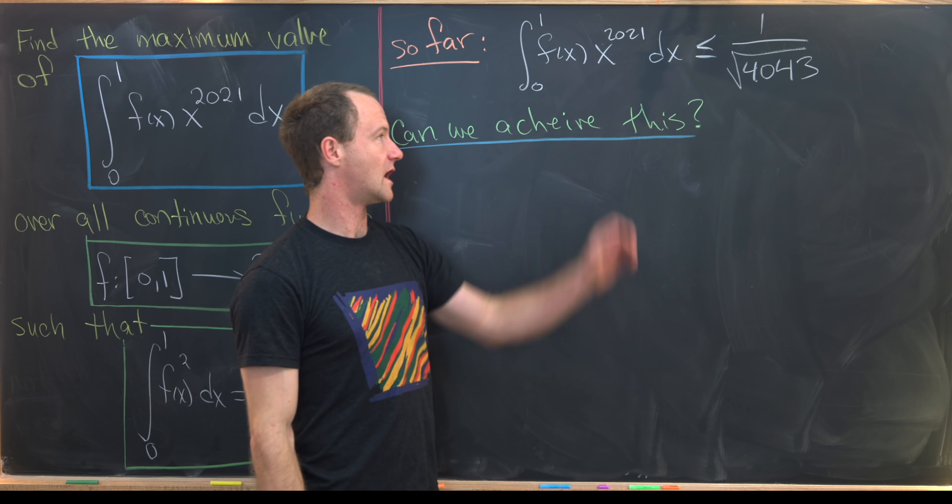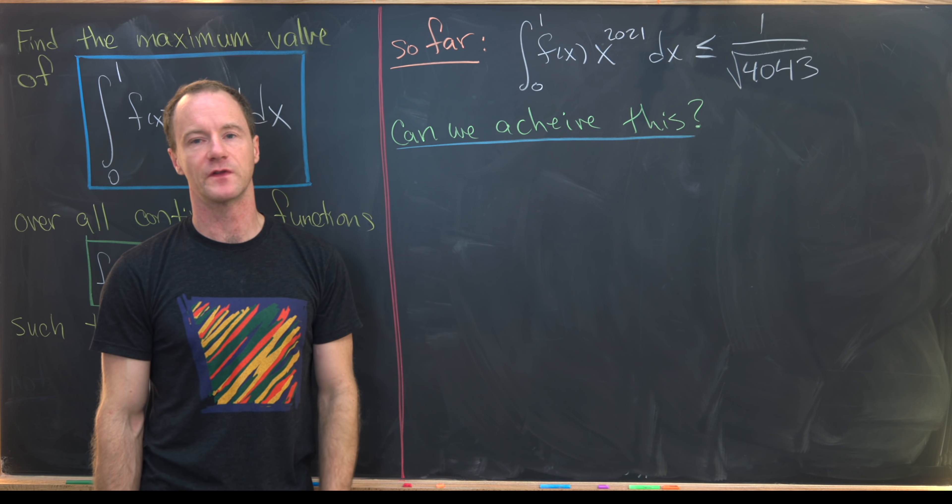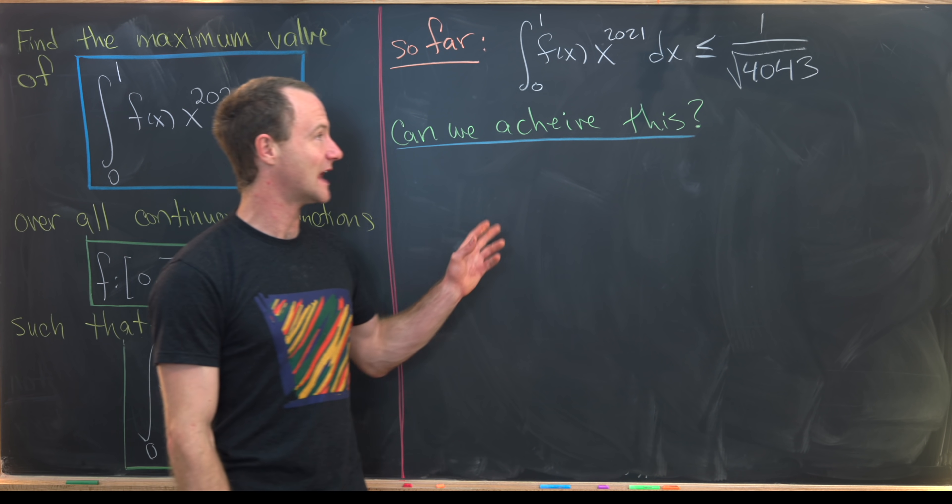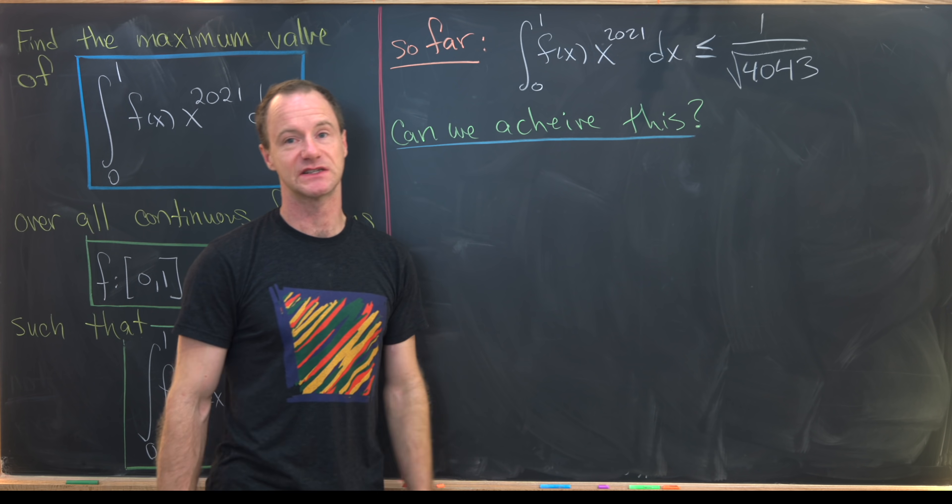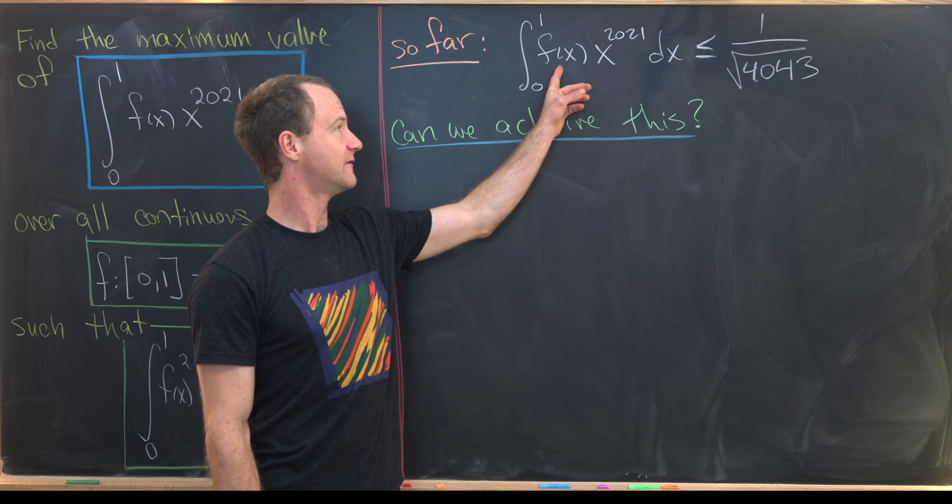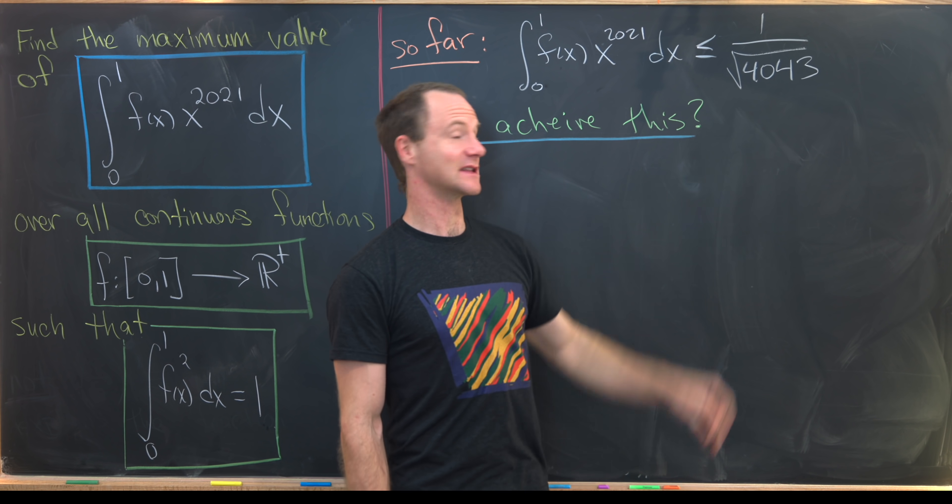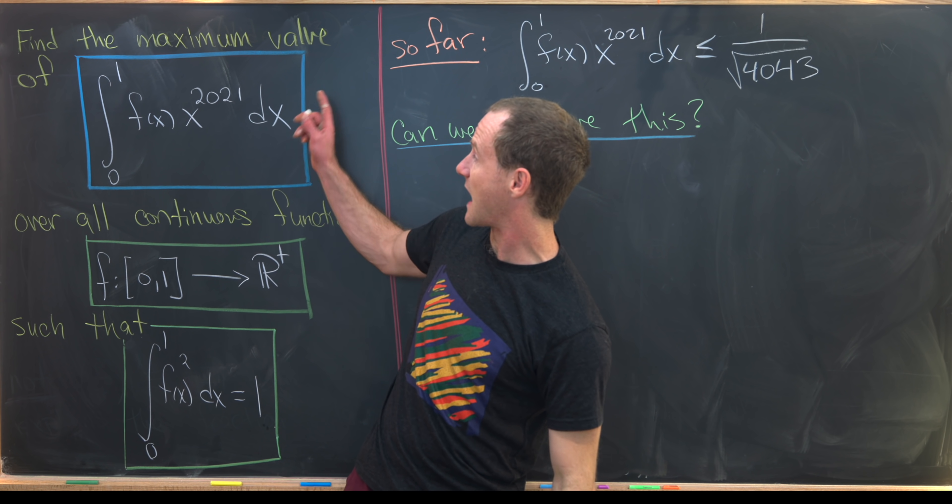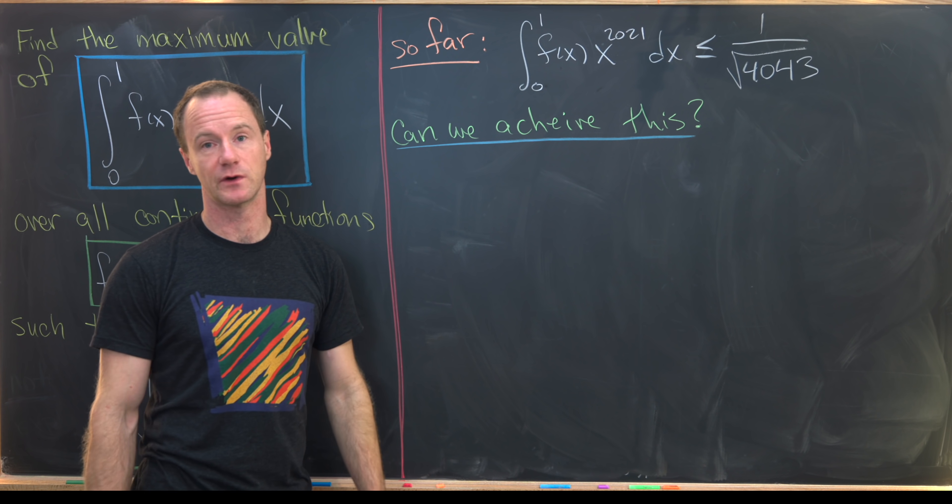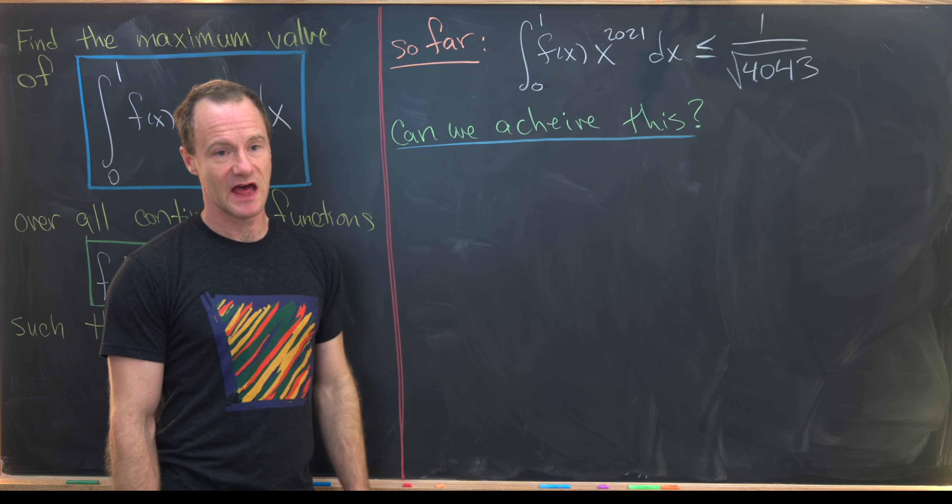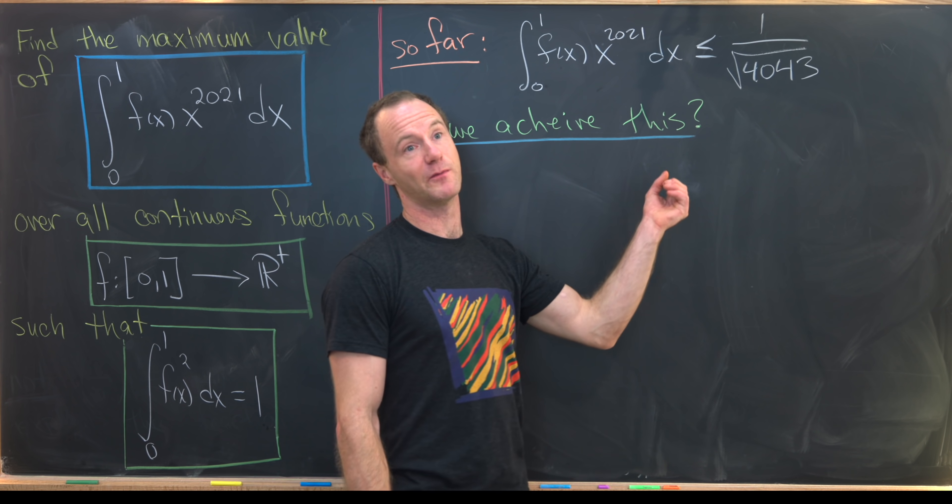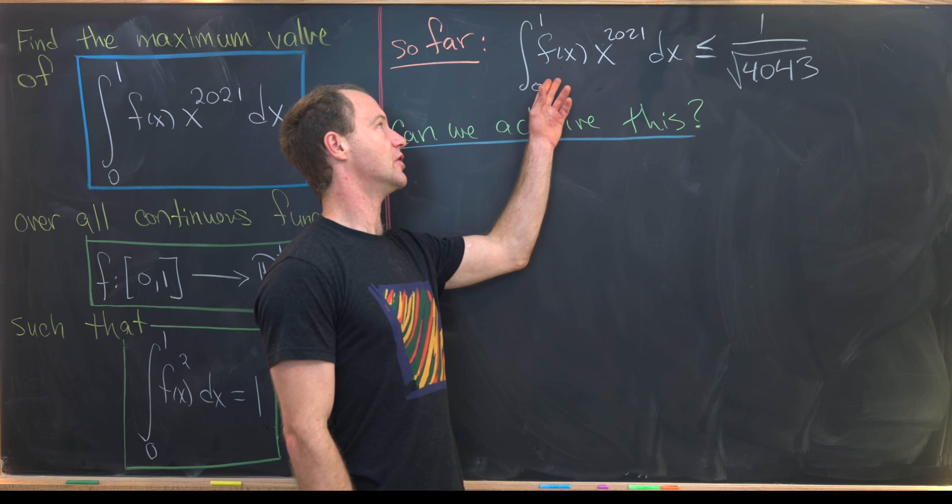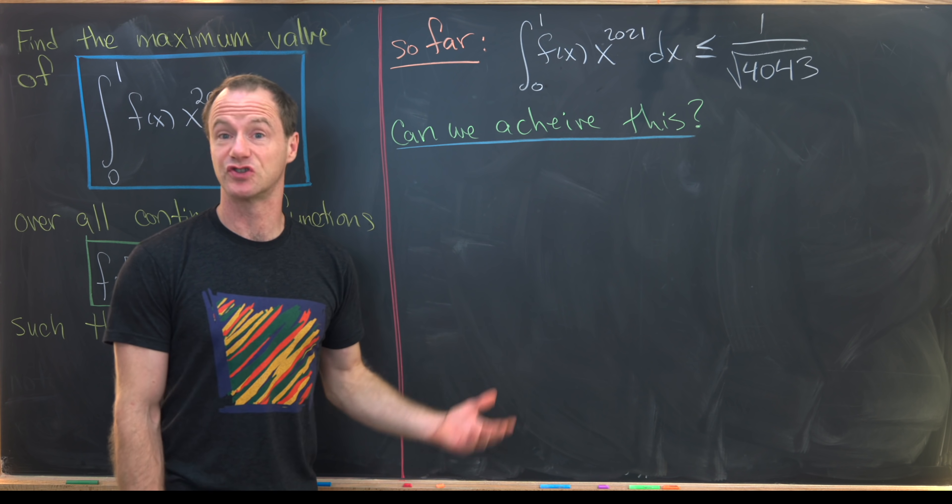On the last board, we determined that our goal object is less than or equal to 1 over the square root of 4043. And now we're left with the following question: can we achieve this maximum value? In other words, can we find an f so that this integral is exactly equal to 1 over 4043? And that means we would have the maximum value of this thing at 4043. Now, if we can't easily find such an f, then we have to show that this upper bound is too high and thus find a lower one, or somehow argue that even though we don't know what the f is, this is the strict upper bound.